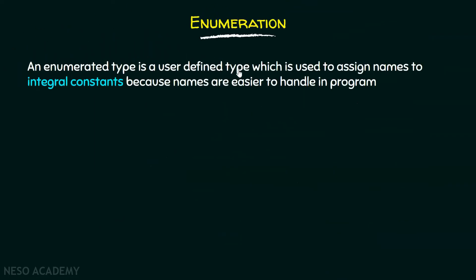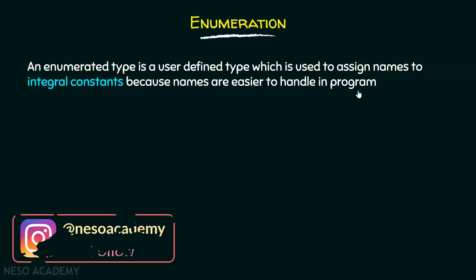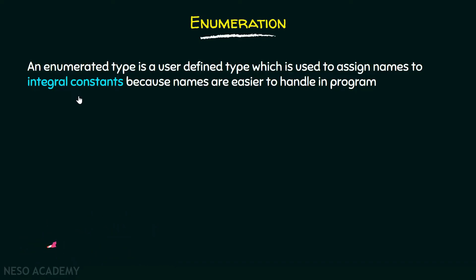An enumerated type is a user defined type which is used to assign names to integral constants, because names are easier to handle in a program. It is a user defined type like structure and union. Its main purpose is to assign names to integral constants so that we can handle them easily.